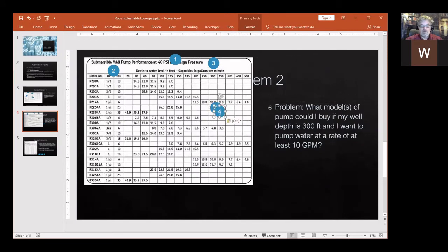One, two, three. So I have three possible answers. So I've got three model numbers I can choose from that are at least 10 gallons per minute.